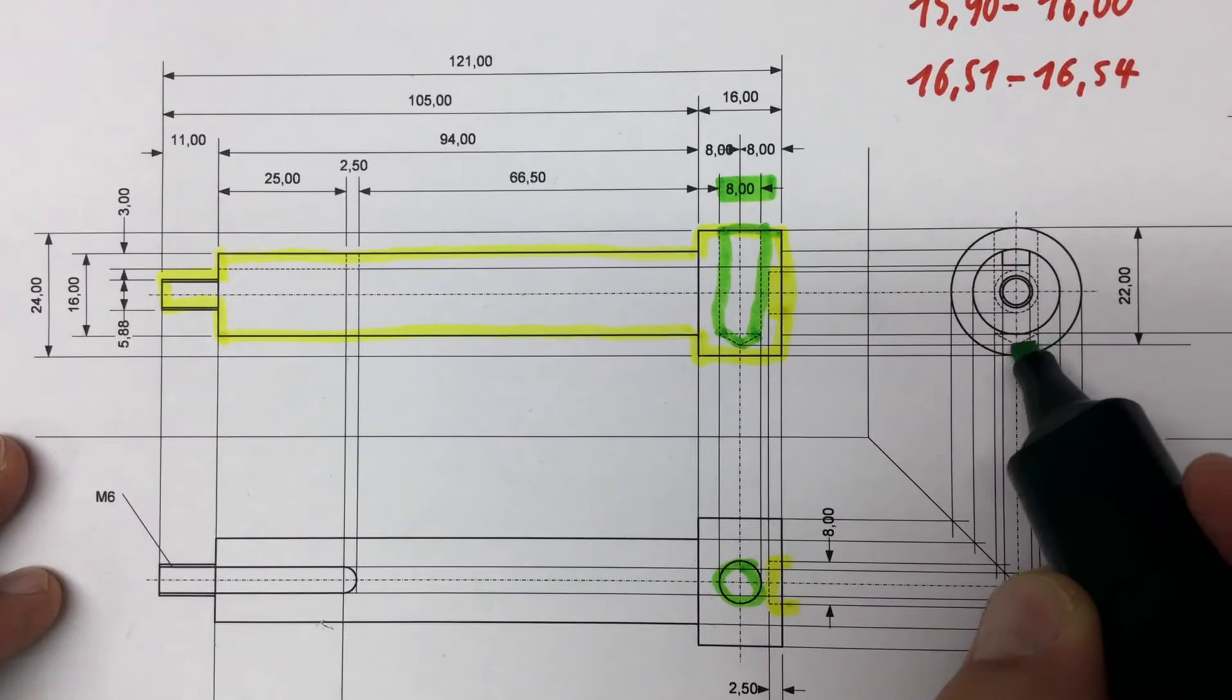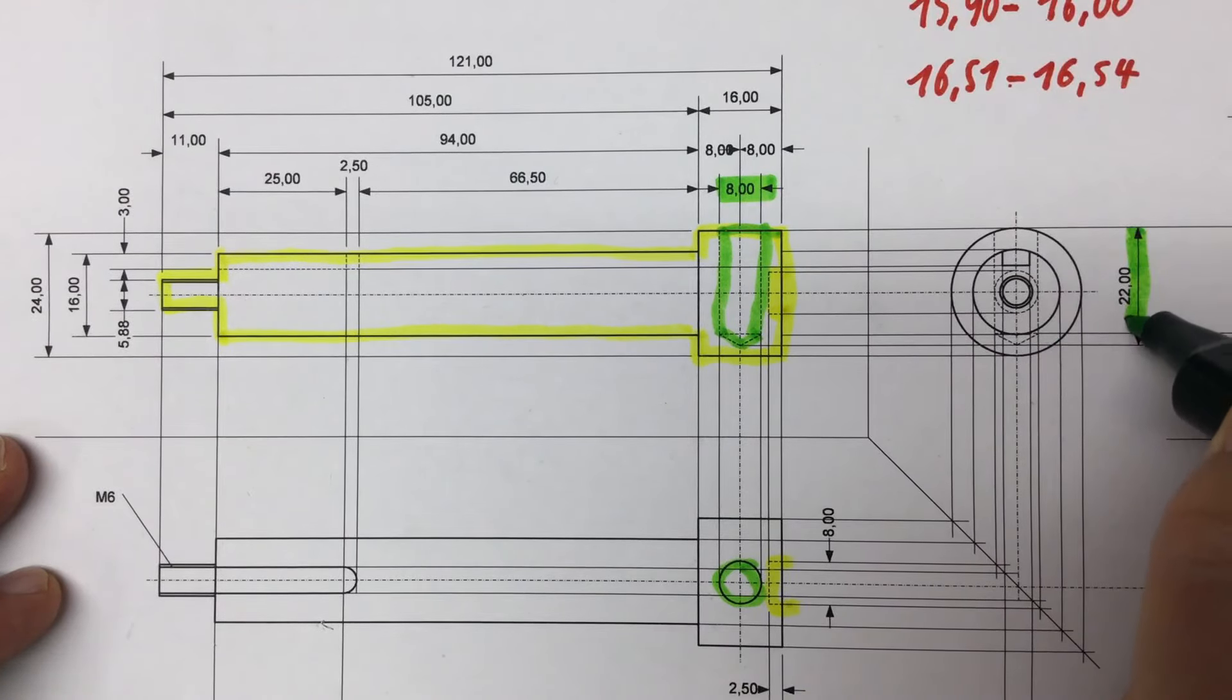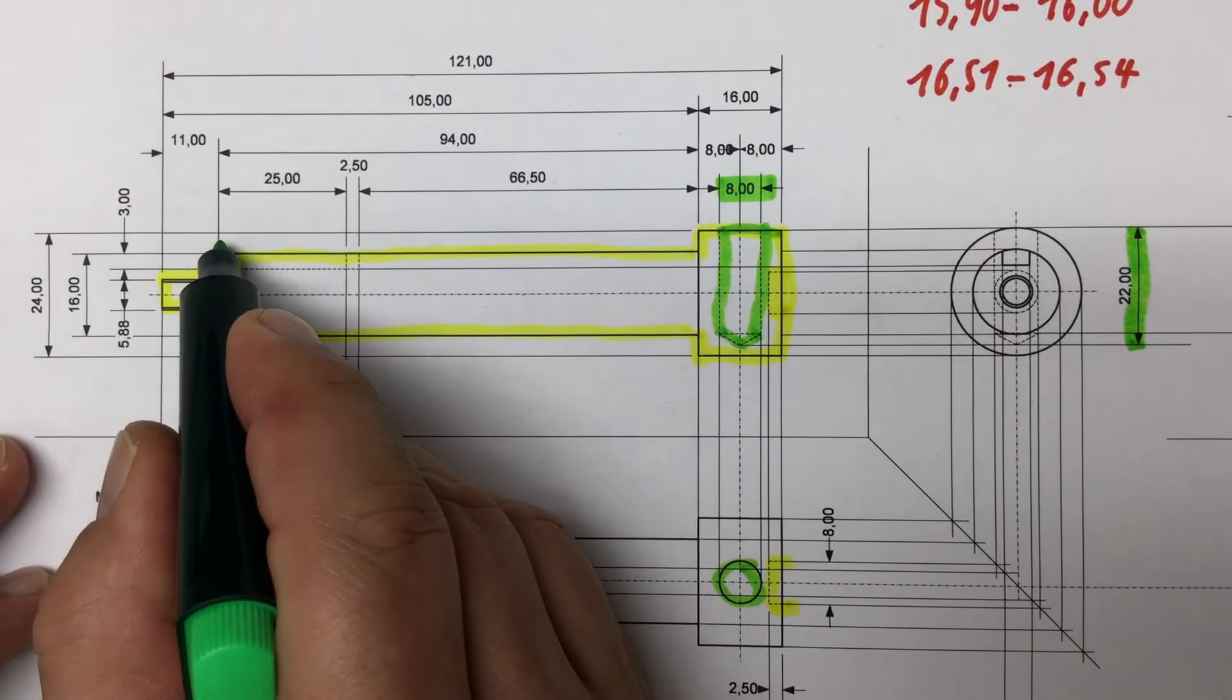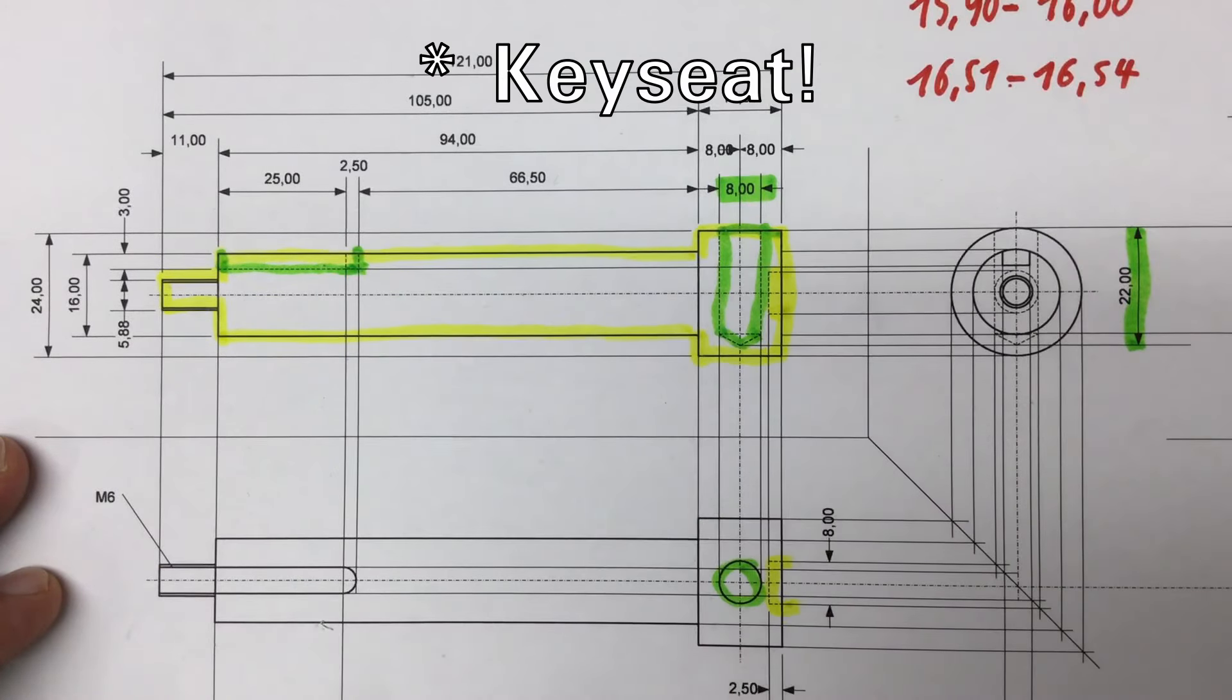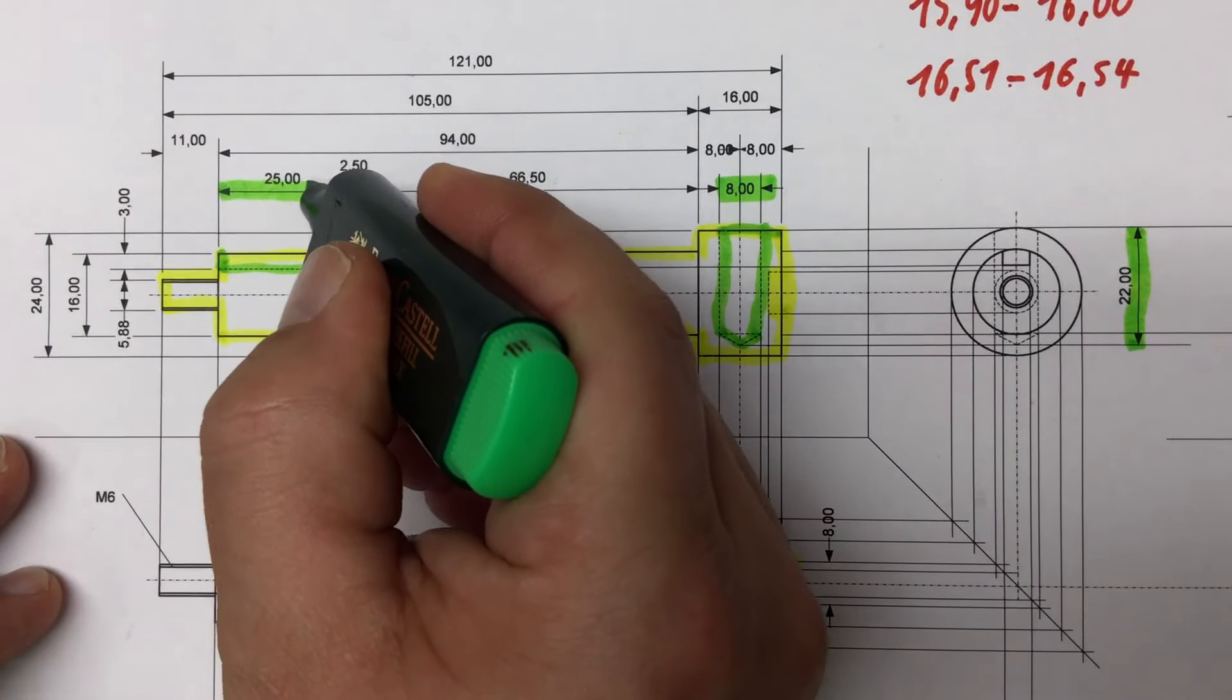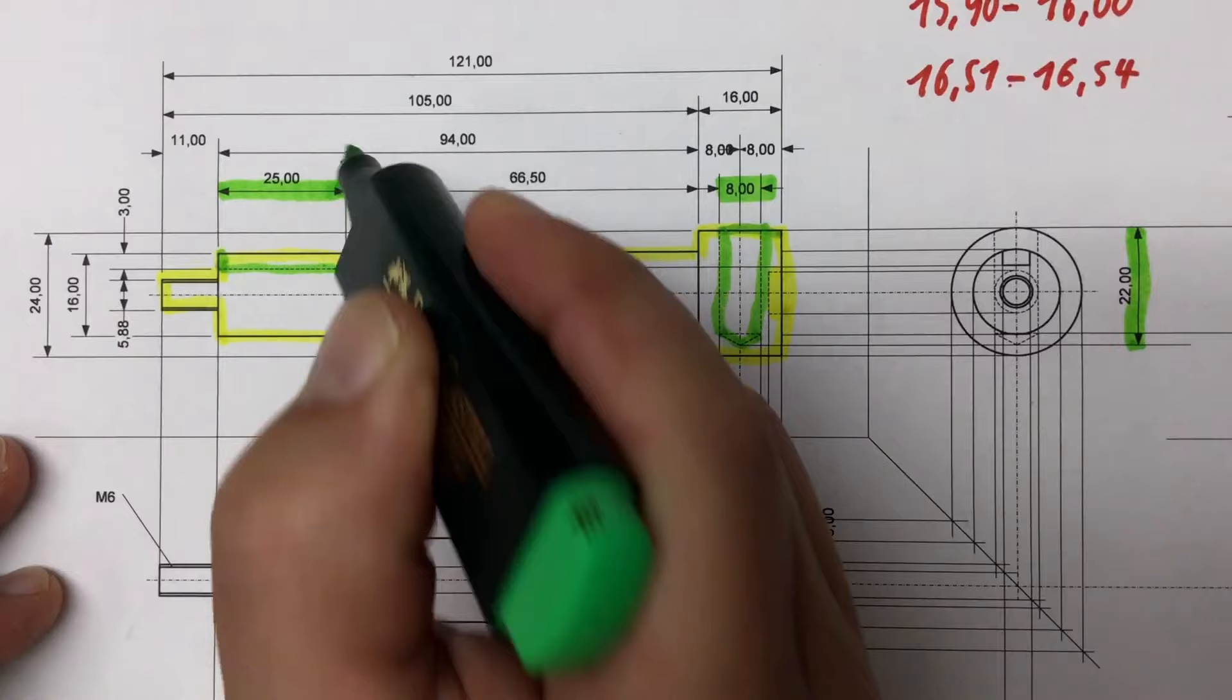The other feature is a cutout here for a key, so basically a keyslot that has a total length of 25 mm without the radius and plus 2.5 millimeters for the radius here at the end.